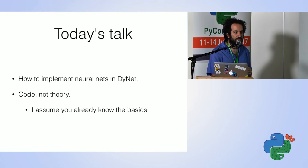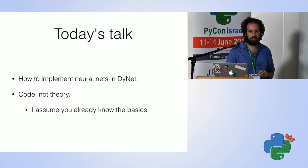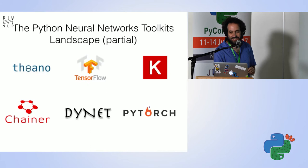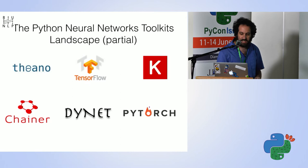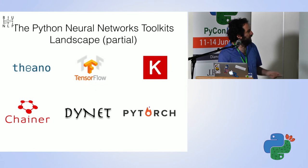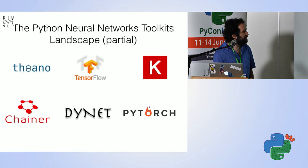Just out of curiosity, how many of you worked with TensorFlow before? So a lot. This is much nicer. Let's give a brief overview of the neural networks toolkit landscape. It's partial, but these are the major players: Theano, TensorFlow, Keras, Chainer, DyNet, and PyTorch.